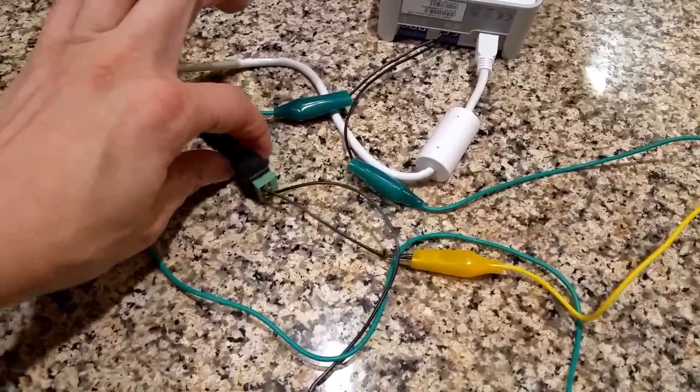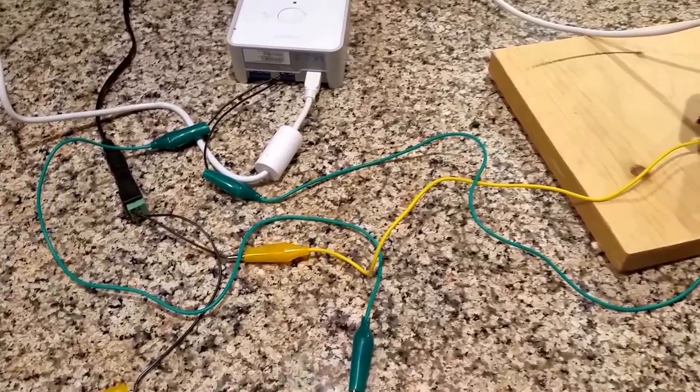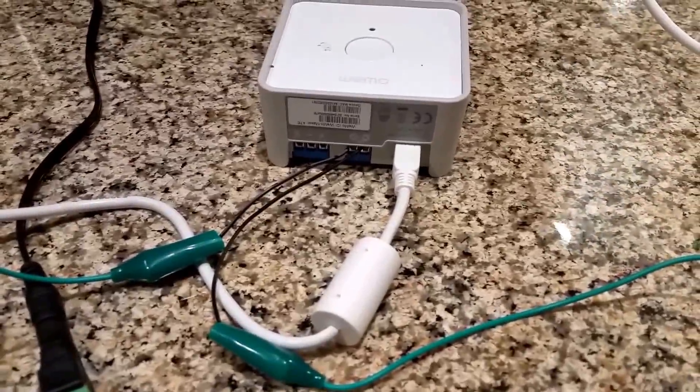You can see that it's linking into the WeMo maker. And then just the power source, a regular 12 volt DC power source. And it's fairly simple to wire, just terminal to power source and then terminal to the actual relay here, the WeMo maker.